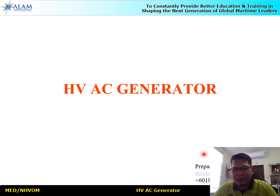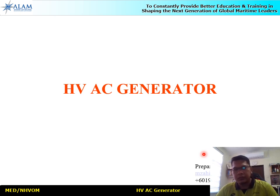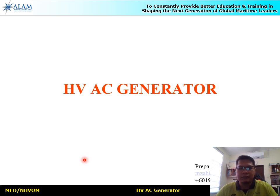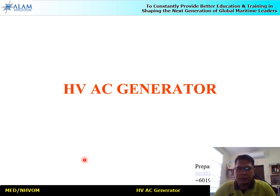Bismillahirrahmanirrahim, assalamualaikum and very good day to everyone. Next we're going to look at topics regarding high voltage AC generators. Generators are a part of equipment that produce electrical power for ships. We'll look at the difference between high voltage and low voltage generators — construction, protections, and most importantly, how high voltage generators are able to generate voltages higher than low voltage generators.